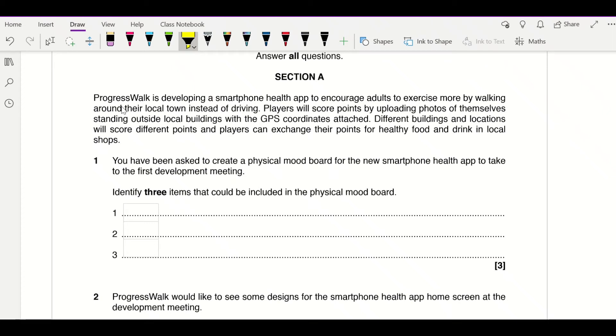This is question one from the 2019 Creative iMedia paper. This question is all about a company called ProgressWalk and developing a smartphone app that will encourage people to do more exercise by walking around the local town rather than driving. You score points for uploading pictures as you stand outside buildings which then have the GPS coordinates attached, and different buildings equal different points.